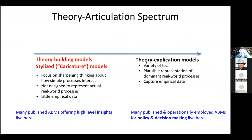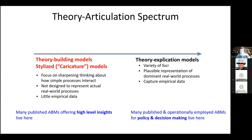We're going to be talking about this theory explication or articulation spectrum, where we have models that seek to take existing theory and explicate it — to say, what are the implications of this? If this is a reasonable theory, if we take it as a starting point and postulate it, what are its implications? Maybe we try two different theories, but we have something fairly concrete — a theory, a plausible representation.